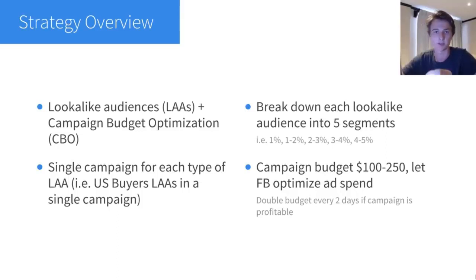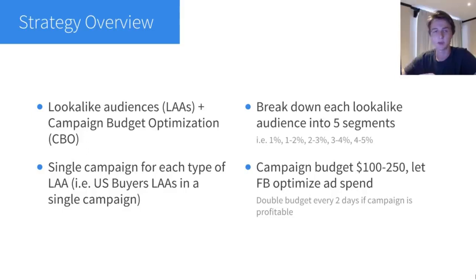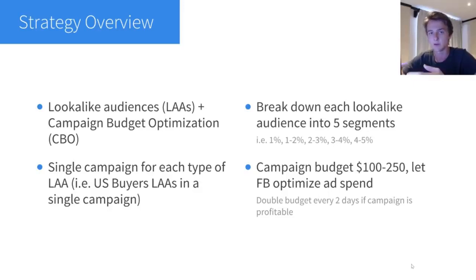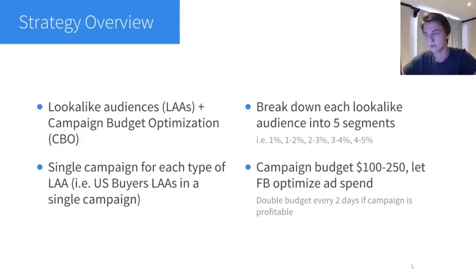When you combine lookalike audiences with CBO — which is an extremely powerful tool to distribute your budget according to performance — you get a campaign that spends your budget very efficiently, as long as everything else is in order: a good offer, good product, good website. You're going to want to have a single campaign for each lookalike audience type and each country individually. For example, a single campaign for buyer lookalikes for the US, another for the UK, segmented by country and lookalike type.